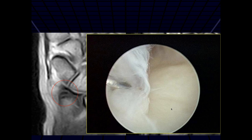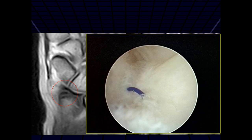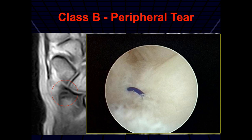This is what it looked like at arthroscopy, where you can see the tear viewed arthroscopically. That's the probe going into the tear. So this was a tear that went into the disc and into the periphery, and they sutured it to try to stabilize it. So this was confirmed as a peripheral tear at arthroscopy.